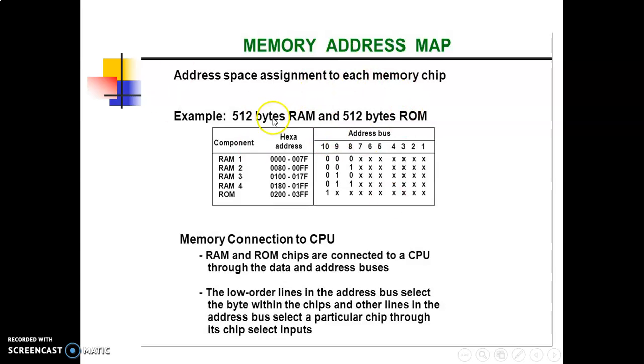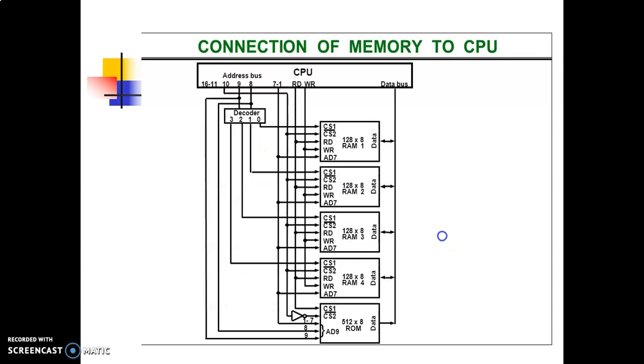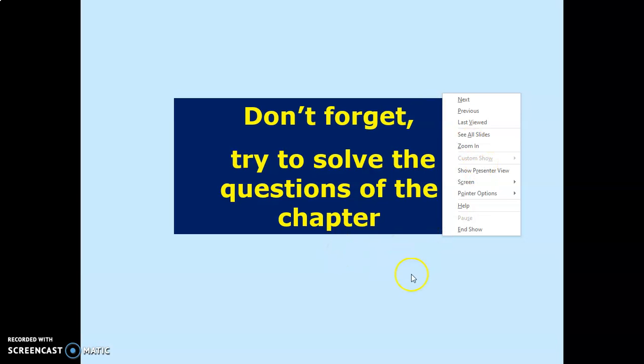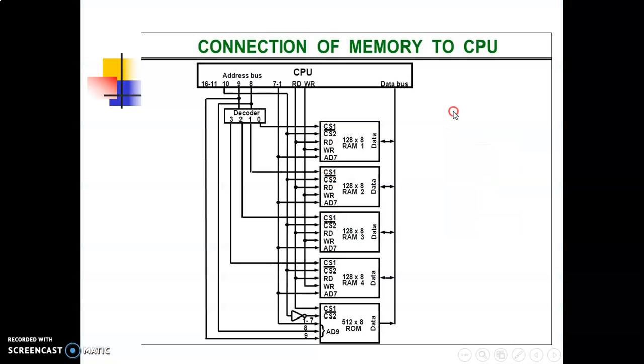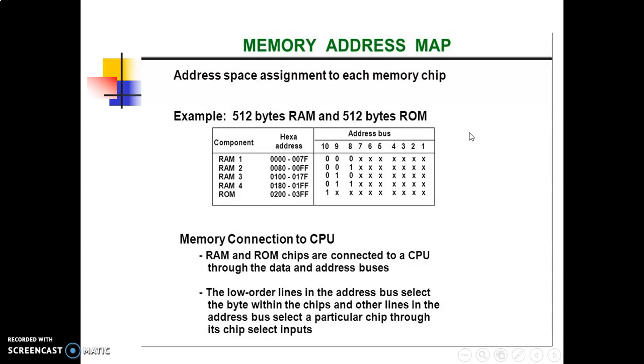This table is called a memory address map. It is a pictorial representation of assigned address space for each chip in the system. Here we take one example in which 512 bytes of RAM and 512 bytes of ROM are used. The RAM and ROM chips to be used are specified here. The memory address map for this configuration is shown in that particular table.